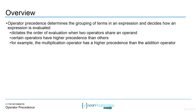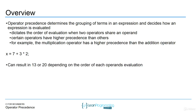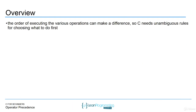For example, the multiplication operator has a higher precedence than the addition operator. Certain operators have different orders of evaluation. If you perform a compound statement with many different calculations — for example, seven plus three times two — this can have multiple results. You need to understand: do you do the addition first or the multiplication first? Because depending on what you do first, the result changes. The result can either be 13 or 20, and the order of executing the various operations can make a huge difference.